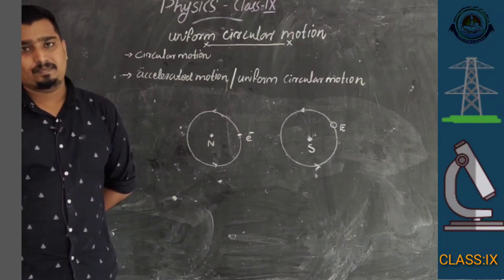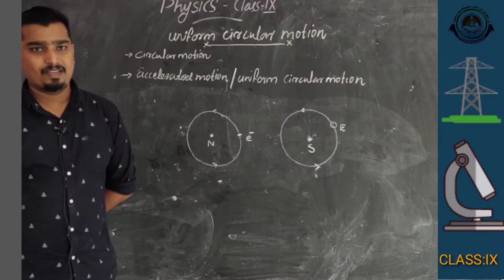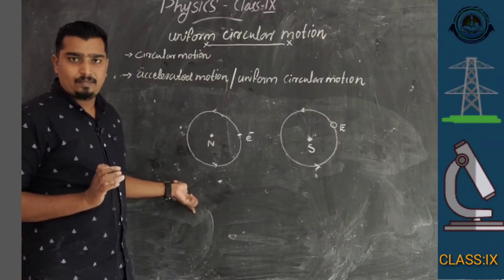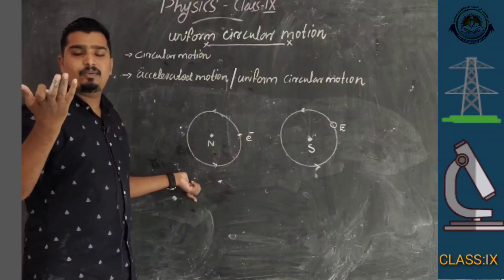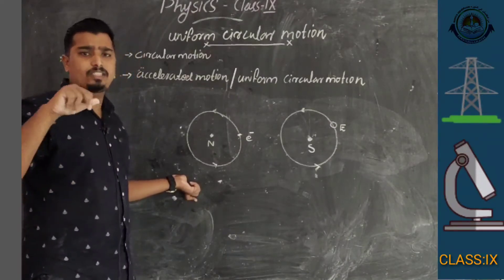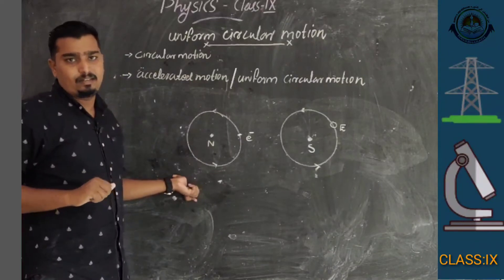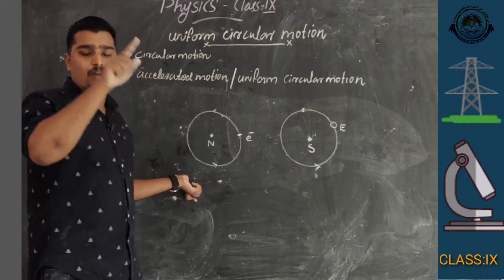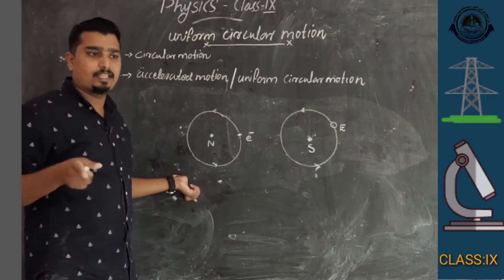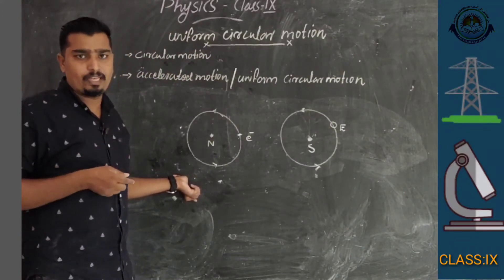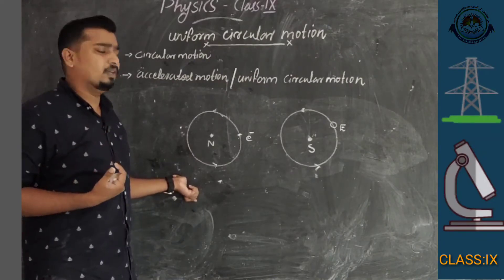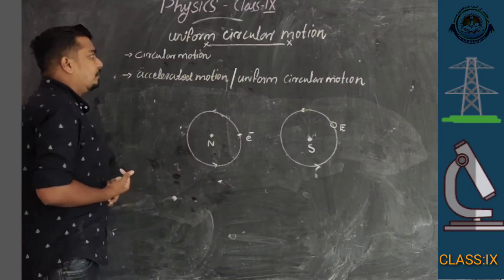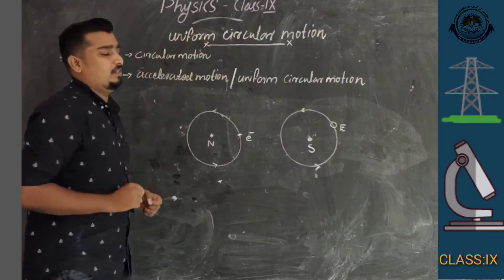Another example: in our clock, the second hand is revolving around a circular path. The clock pendulum is also an example of circular motion.